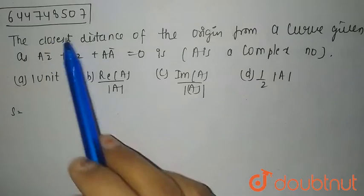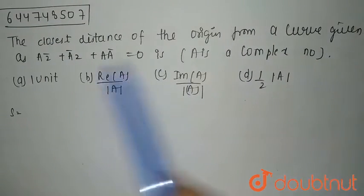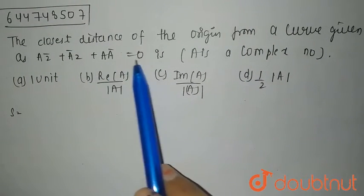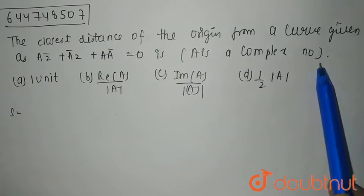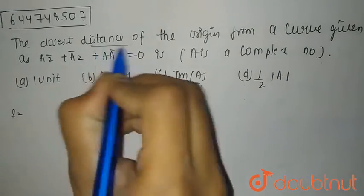Hello everyone, so our question is closest distance of the origin from a curve given as az bar plus a bar z plus a a bar equals 0 where a is a complex number. We need to find the closest distance.